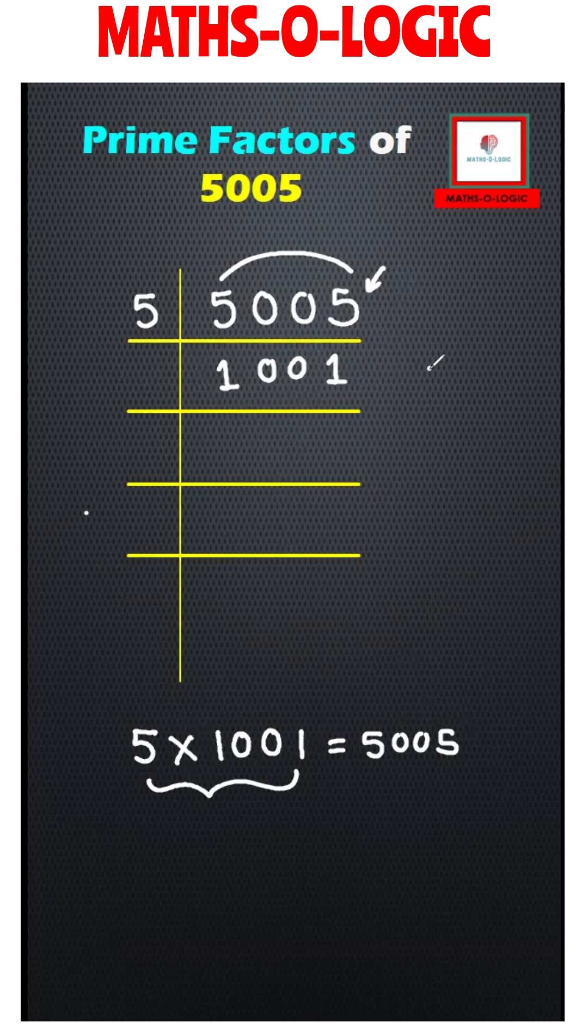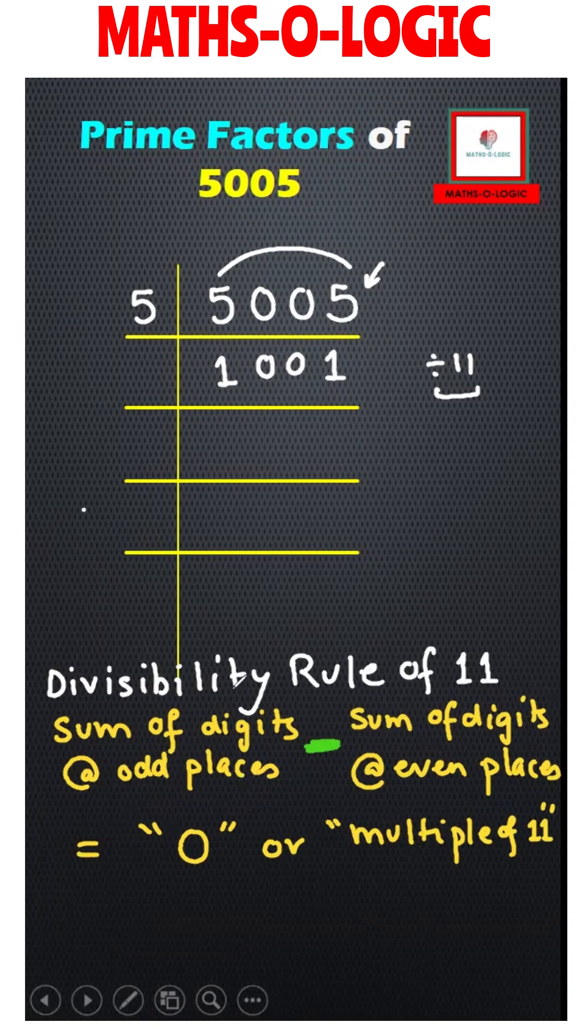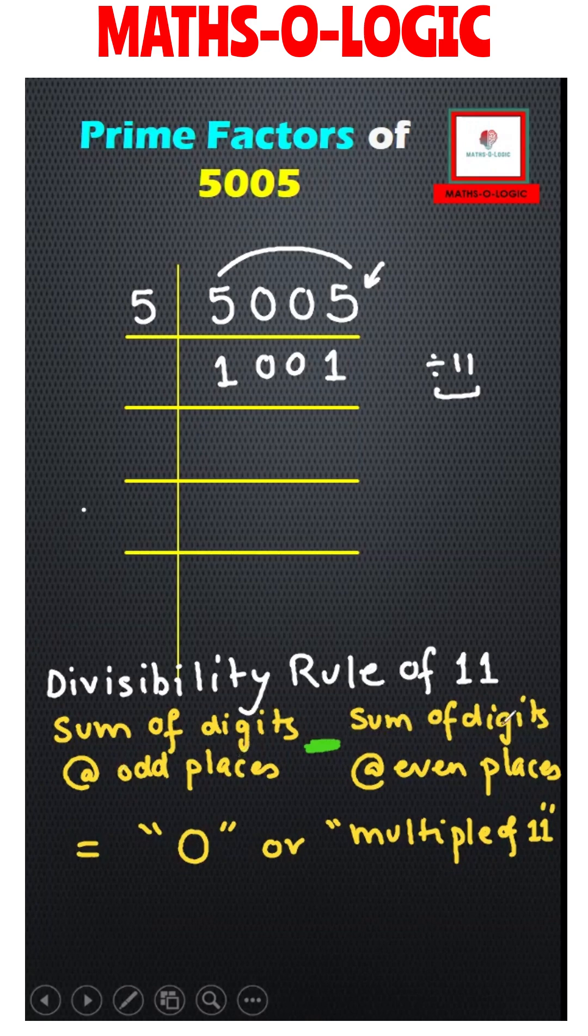I am going to use the divisibility rule of 11. The divisibility rule of 11 says that the sum of digits at odd places minus the sum of digits at even places must be either 0 or a multiple of 11.